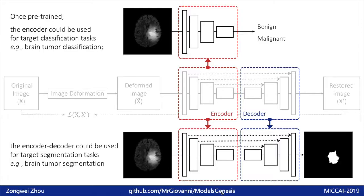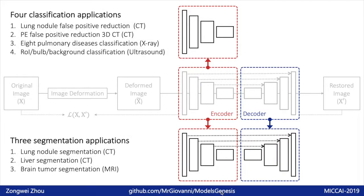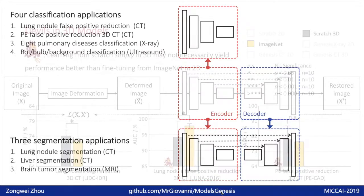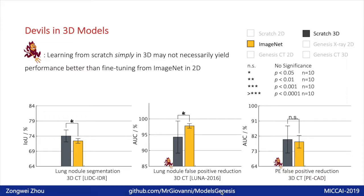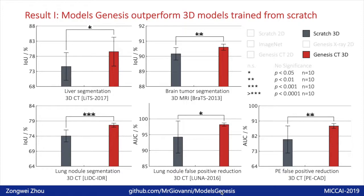We have evaluated Models Genesis on seven different medical applications, including classification and segmentation on CT, MRI, ultrasound, and X-ray images across diseases and organs. First, 3D models are critical to utilize spatial information offered by 3D medical images. However, training 3D models directly is not easy because they usually have more parameters to optimize. Two out of three target applications show that they perform equivalent or even worse than 2D imaging models. But our pre-trained Models Genesis significantly outperform 3D models learned from scratch.